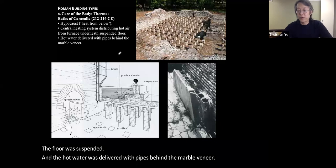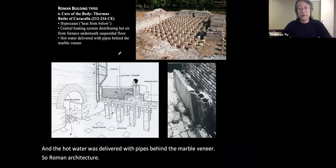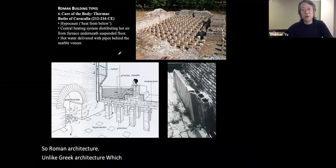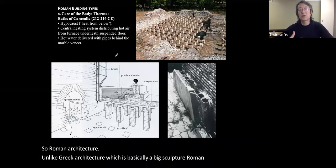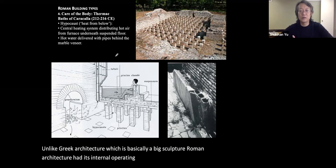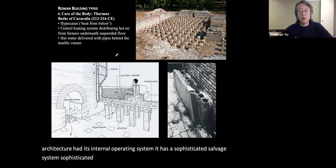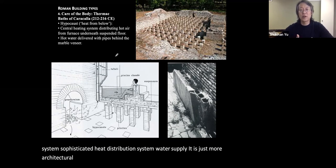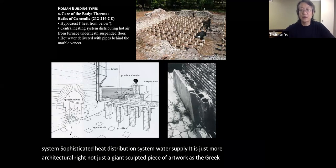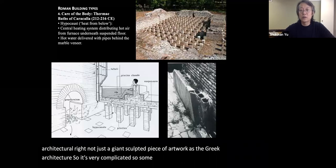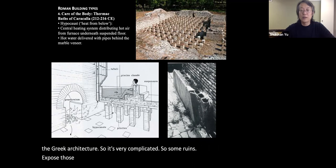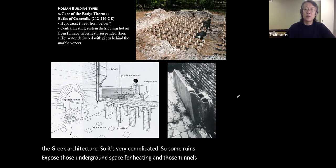Unlike Greek architecture, which is basically a big sculpture, Roman architecture had its own internal operating system. It had a sophisticated sewage system, sophisticated heat distribution, and water supply — it is just more architectural, not just a giant sculpted piece of artwork. Some ruins expose those underground spaces for heating and tunnels for distributing heat and water.